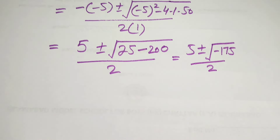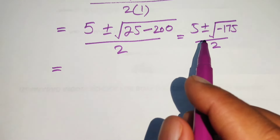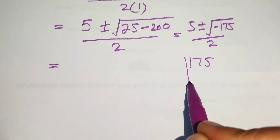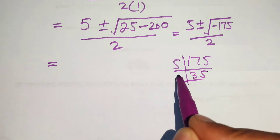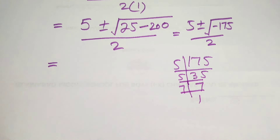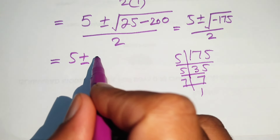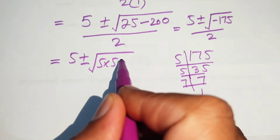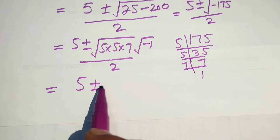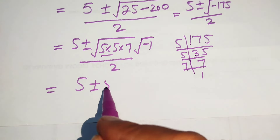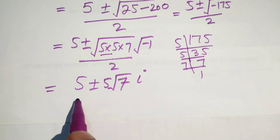We further simplify this expression by finding the prime factors of 175. Dividing by 5 and 7, we get 175 equals 5 times 5 times 7. So the expression becomes 5 plus or minus square root of 5 times 5 times 7 times minus 1, divided by 2. Taking the pair of 5s outside the square root gives 5 times square root of 7, and since square root of minus 1 equals iota, we get 5 plus or minus 5 root 7 iota, divided by 2.